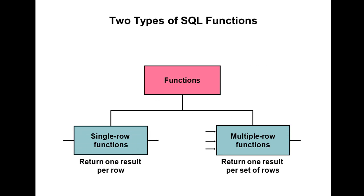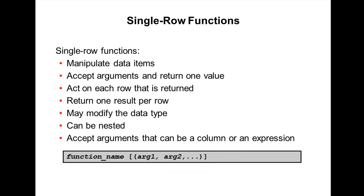There are two types of SQL functions in Oracle. One is single row functions and the other is multiple row functions. Single row functions operate on single rows only and return one value per row. There are different types of single row functions in Oracle like character, number, date, and conversion functions. Multiple row functions can manipulate groups of rows to give one result per group. Multiple row functions will be explained in the next chapter.